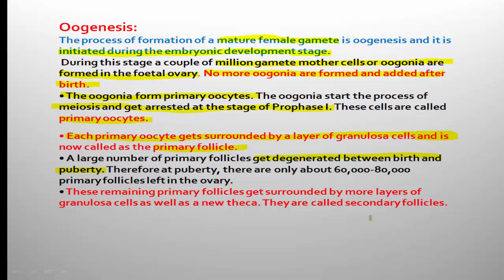In the mature graafian follicle, the female gamete egg is present. This conversion occurs at the time of puberty. Although primary follicles are produced in the ovary of the female baby, they undergo conversion when the girl reaches puberty. However, many follicles degenerate, so at puberty only 60,000 to 80,000 primary follicles remain in the ovary.